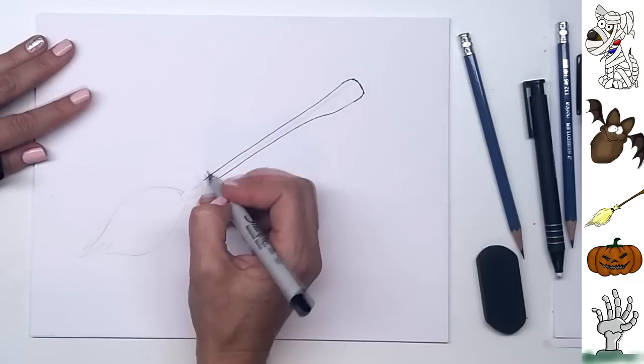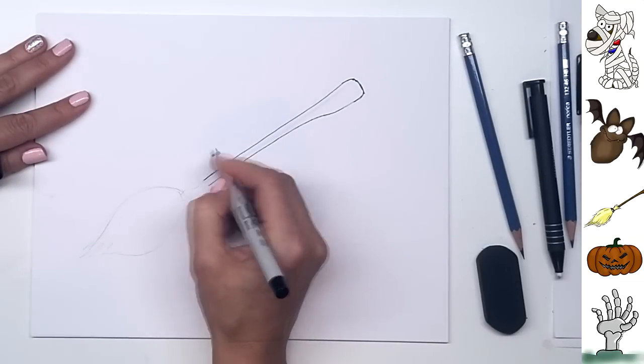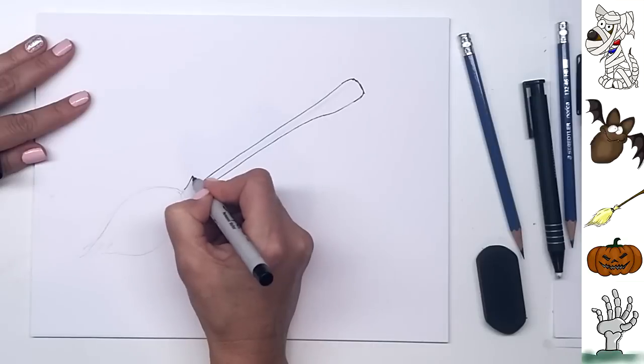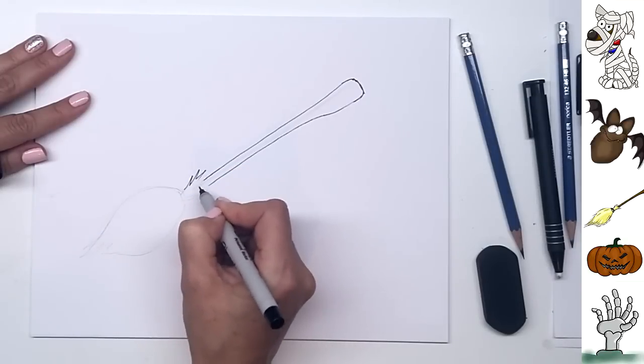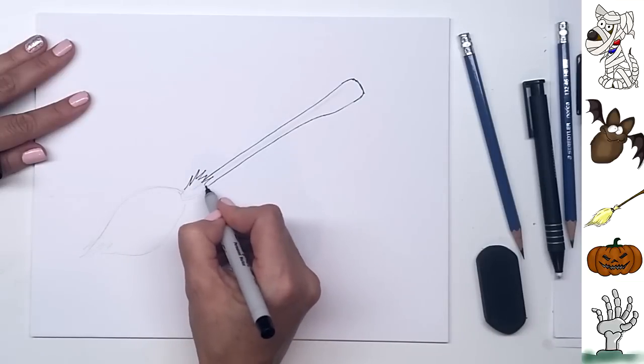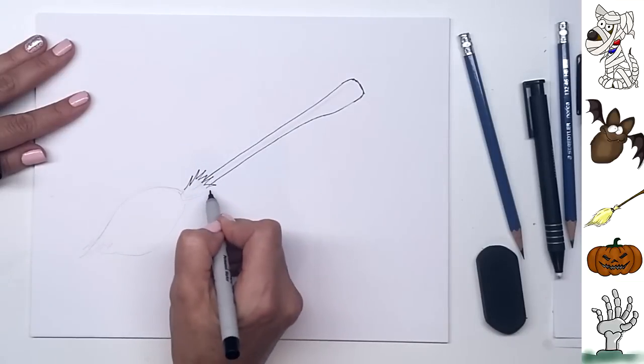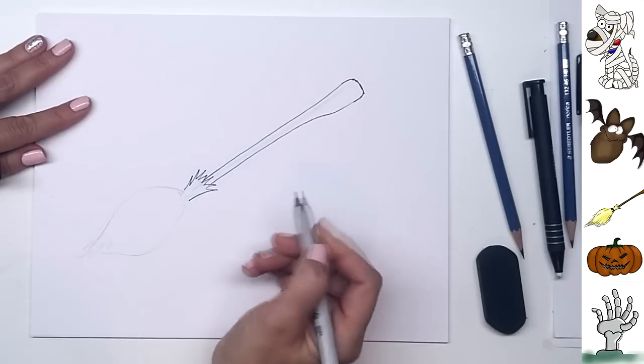All right, and next we're going to draw some straw down here. So starting in this triangle area, we're just going to draw some little wisps of straw. So these are just tight little V's that are going to show where the straw is on the broom and coming down like so.